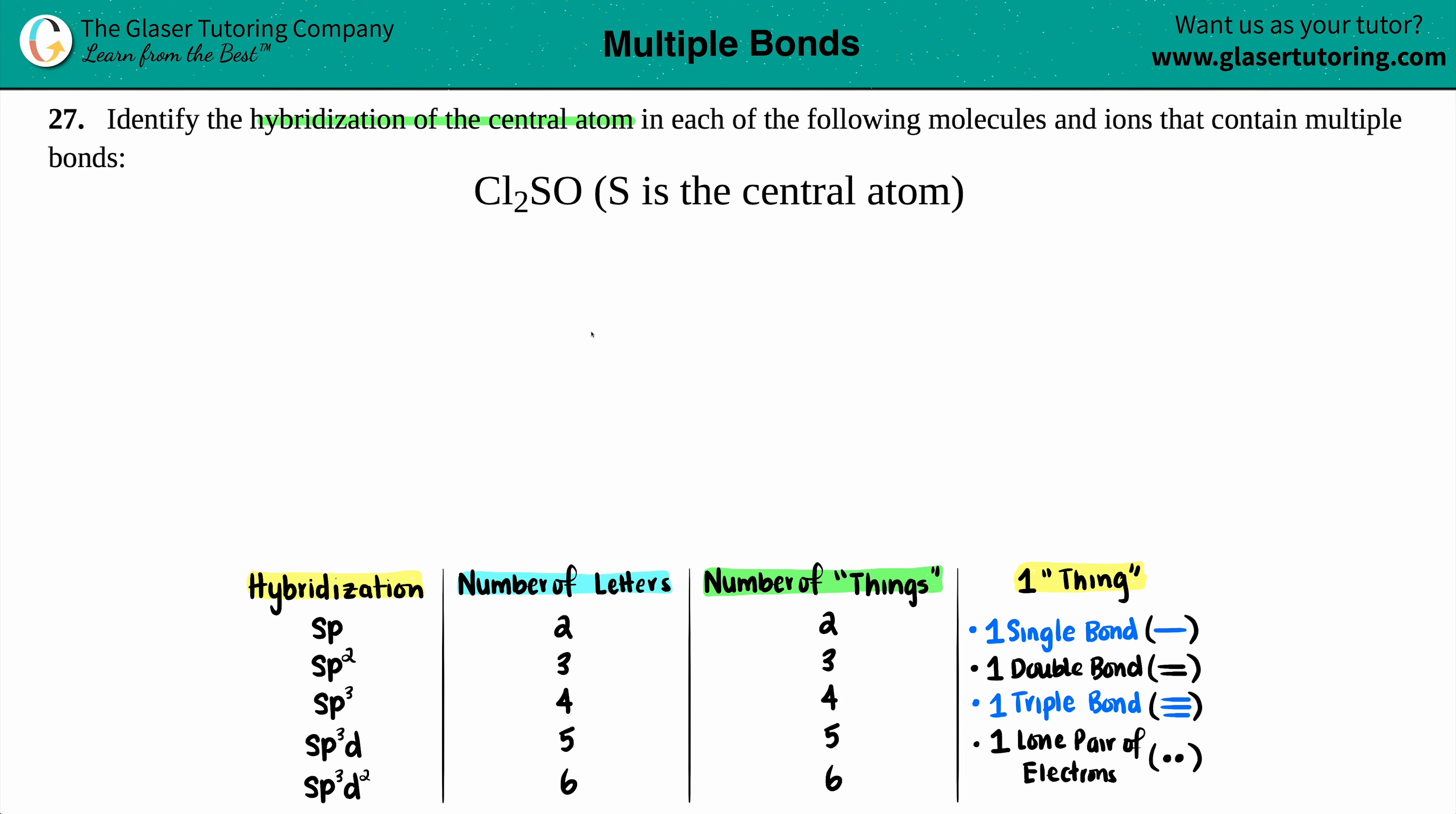We're going to do a quick version and then get to the hybridization. They tell us that sulfur is the central atom, so I'm going to have sulfur in the middle, and all the other elements—two chlorines and one oxygen—are all bound to the sulfur. It doesn't matter where you put your atoms. I'm going to put my two chlorines down here and my one oxygen up here.